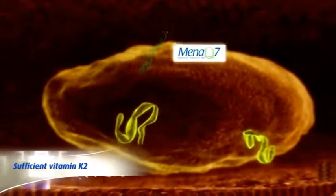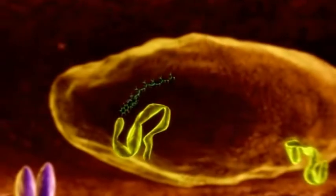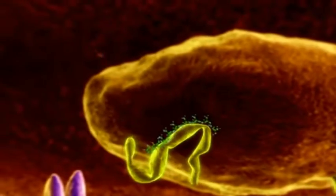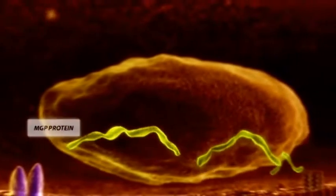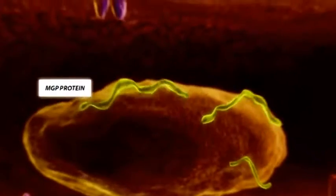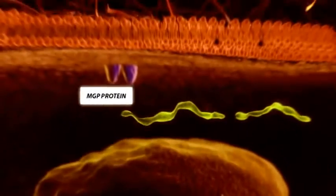When arriving in the arterial vessel wall, MeniQ7 is crossing the cell membrane of the vascular smooth muscle cells. Vitamin K2 acts in the cell as an activator of matrix GLA protein.